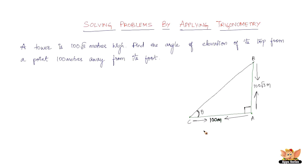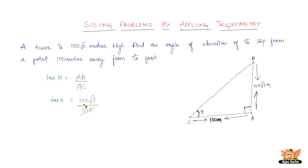Recalling trigonometry: sin θ = opposite/hypotenuse and cos θ = adjacent/hypotenuse, but we don't know the hypotenuse length here. We do have both the opposite and adjacent sides, so we use tan θ = opposite/adjacent. Therefore, tan θ = AB/AC = 100√3 / 100.